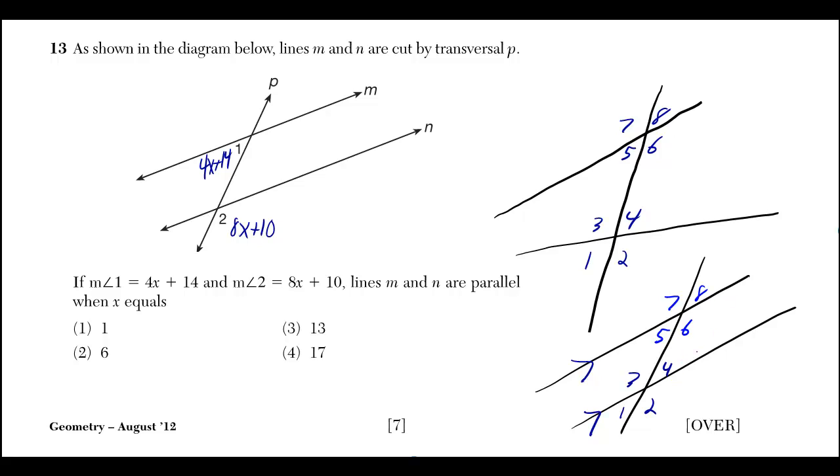Whether or not you have two parallel lines that are cut by a transversal, or two non-parallel lines that are cut by a transversal, you would still say that your angles that correspond are called corresponding angles.